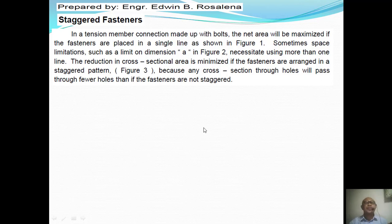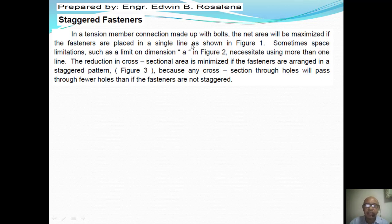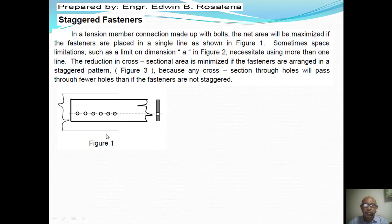Good day everyone. This video presents a discussion on staggered fasteners. In a tension member connection made up with holes, the net area will be maximized if the fasteners are placed in a single line, as shown in figure one. In figure one, we use only one line to connect this tension member to another member.